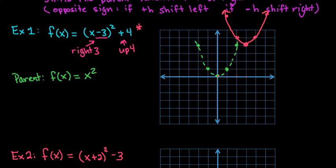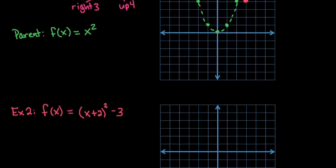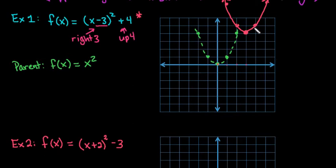For the second one, I won't draw the parent function first because it's the same thing. These other points, if I wouldn't have used the pattern, notice that if I go over 3, 1, 2, 3, and then up 1, 2, 3, 4, it's just moved that point right 3 and up 4. It's moved this point to the right 3, 1, 2, 3, and turned and moved it up 4.